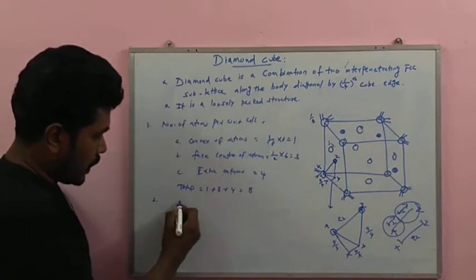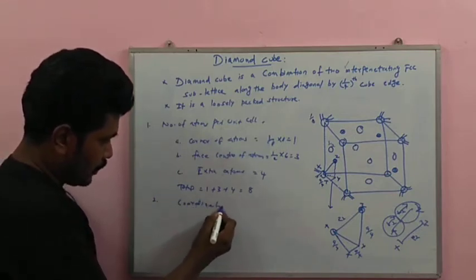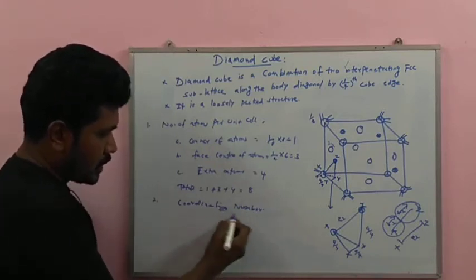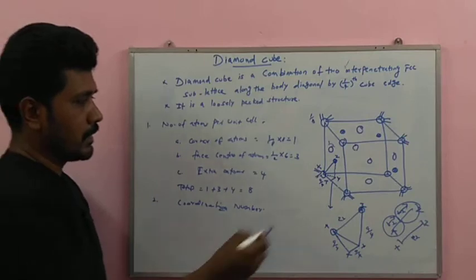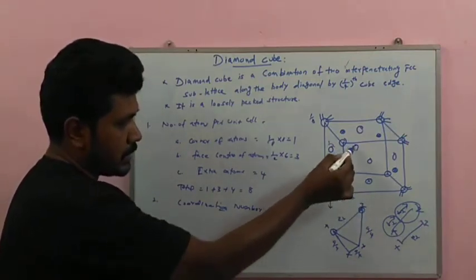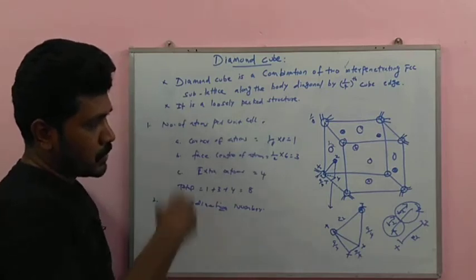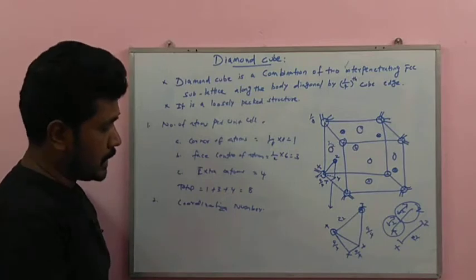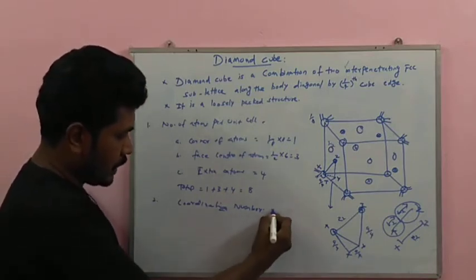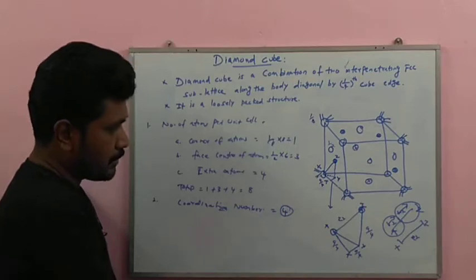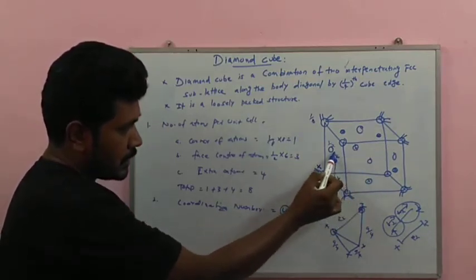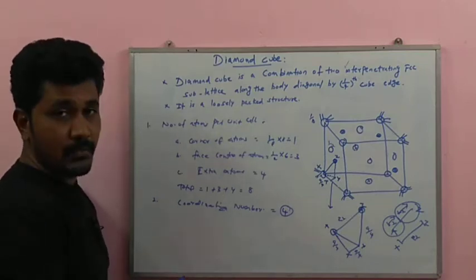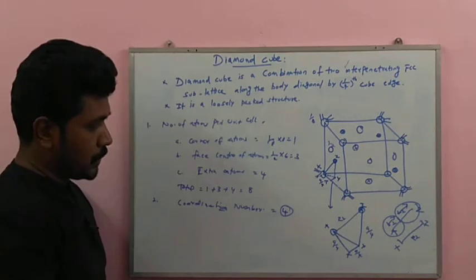Step two: coordination number. The coordination number means how many nearest neighbor atoms surround each particular atom. In diamond cubic, each atom is surrounded by four extra atoms within the unit cell. Therefore, the coordination number is 4.